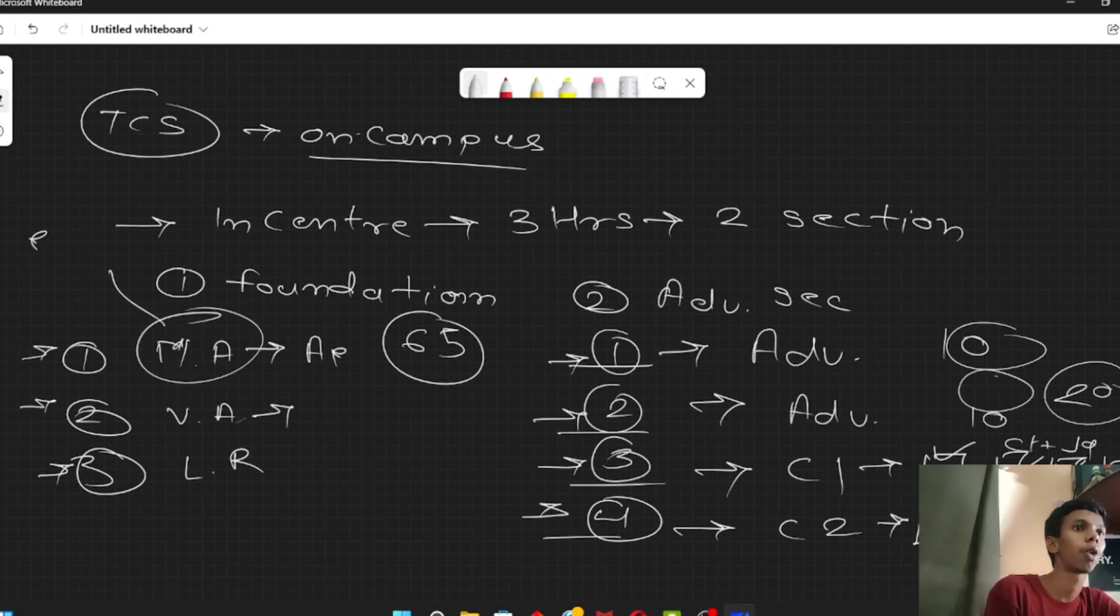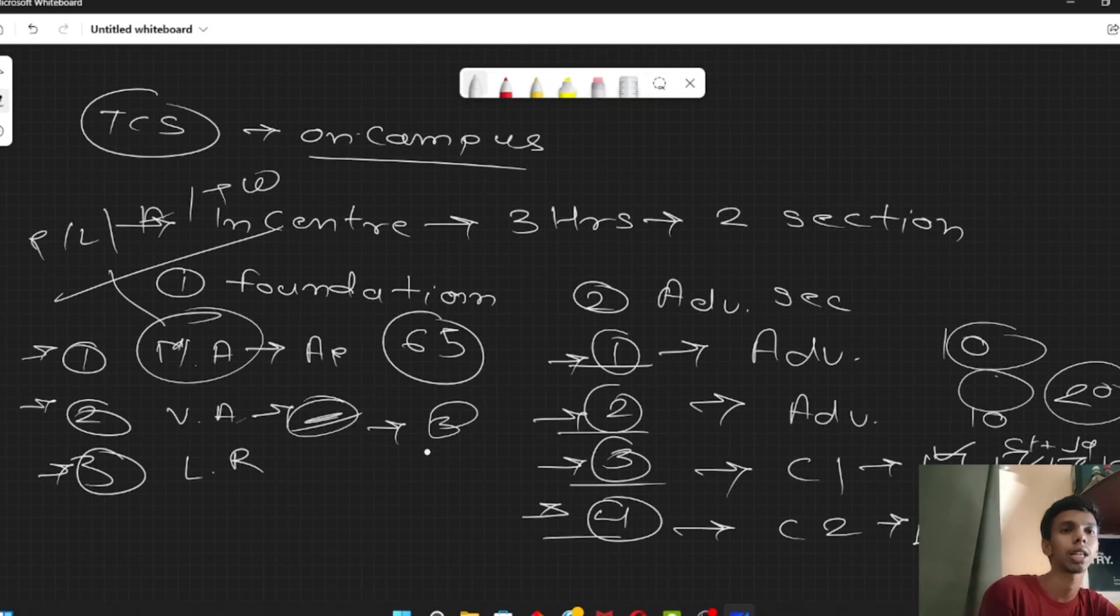Now, the questions were mostly profit and loss, average, time and work. And the verbal ability included which word should be used, which should be the sentence sequence, idioms, etc. And the logical reasoning included directions and blood relation.